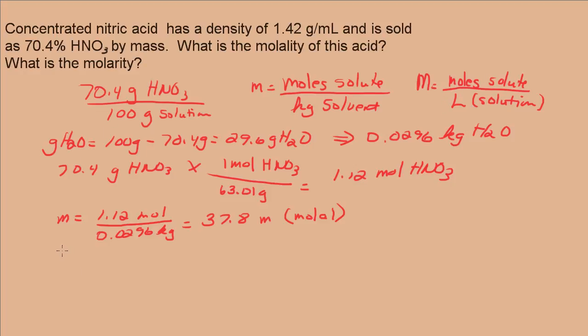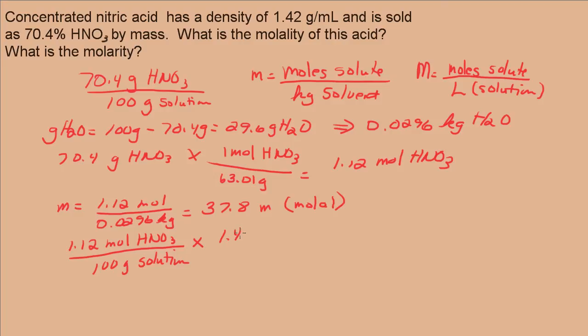I have 1.12 moles of HNO3. And, from up here, per 100 grams of solution. And, I can just use the density, right, because 1.42 grams per milliliter, that is the density of the solution. I have 1.42 grams per milliliter. So, again, this is the solution. And, now all I have to do is convert milliliters to liters. And, I end up with 15.5 molar.